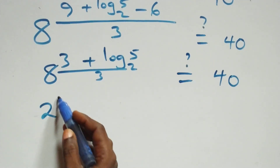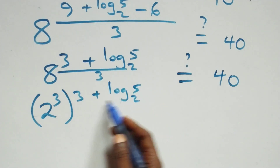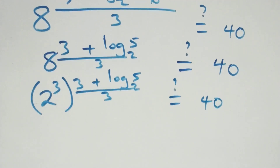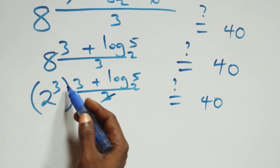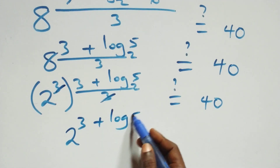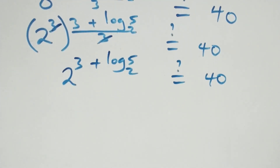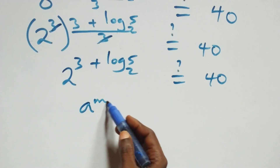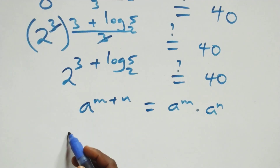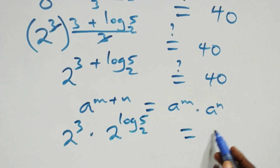We can rewrite 8 as 2 raised to power 3, which is raised to power 3 plus log 5 base 2, all over 3. The outer powers multiply and the 3s cancel each other, so we have 2 raised to power 3 plus log 5 base 2, equal to 40. This follows from the law of indices where a raised to power n plus m equals a raised to power n times a raised to power m. So we have 2 raised to power 3 times 2 raised to power log 5 base 2, equal to 40.